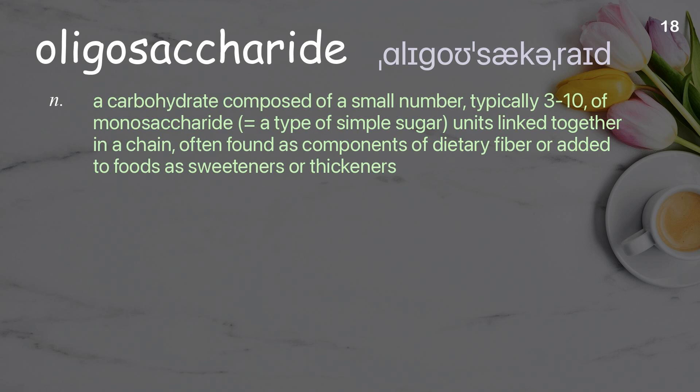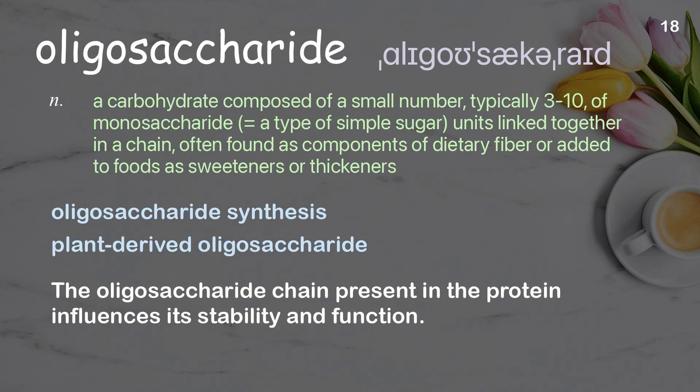Oligosaccharide. A carbohydrate composed of a small number, typically 3 to 10, of monosaccharide units linked together in a chain, often found as components of dietary fiber or added to foods as sweeteners or thickeners. Examples: oligosaccharide synthesis, plant-derived oligosaccharide. The oligosaccharide chain present in the protein influences its stability and function.